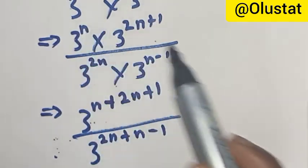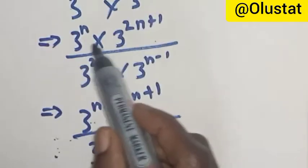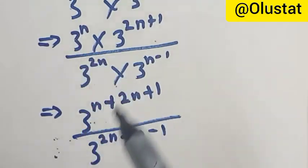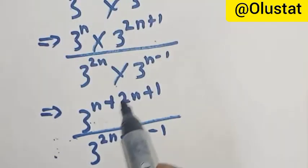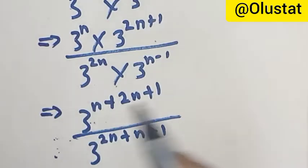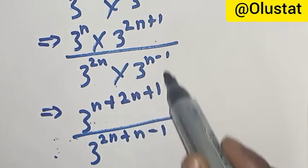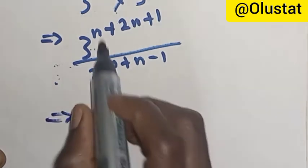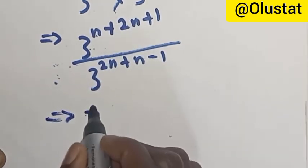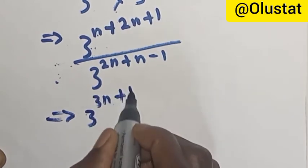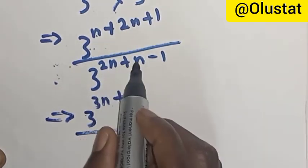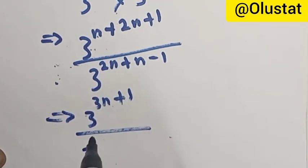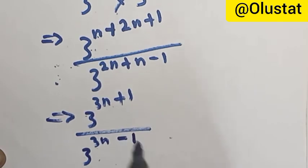We have 3 raised to power n multiplied by 3 raised to power 2n plus 1 — they have the same base, so we add the exponents: n plus 2n plus 1 gives 3n plus 1. The same applies to the denominator: 2n plus n minus 1 gives 3n minus 1. So we now have 3 raised to power 3n plus 1, over 3 raised to power 3n minus 1.